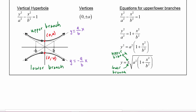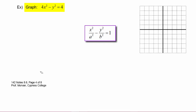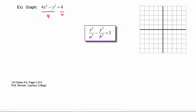Now let's practice graphing a hyperbola. We have the equation 4x² − y² = 4. This is almost in standard form — we need a 1 on the right-hand side, so we divide both sides by 4. The equation becomes x² − y²/4 = 1. To write it fully in standard form, the x² term needs a denominator of 1, giving x²/1 − y²/4 = 1.